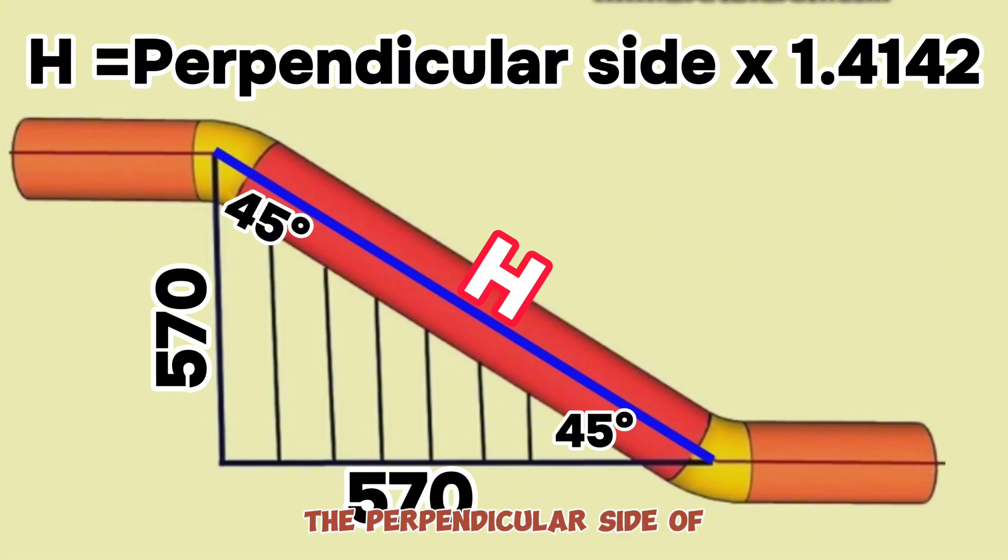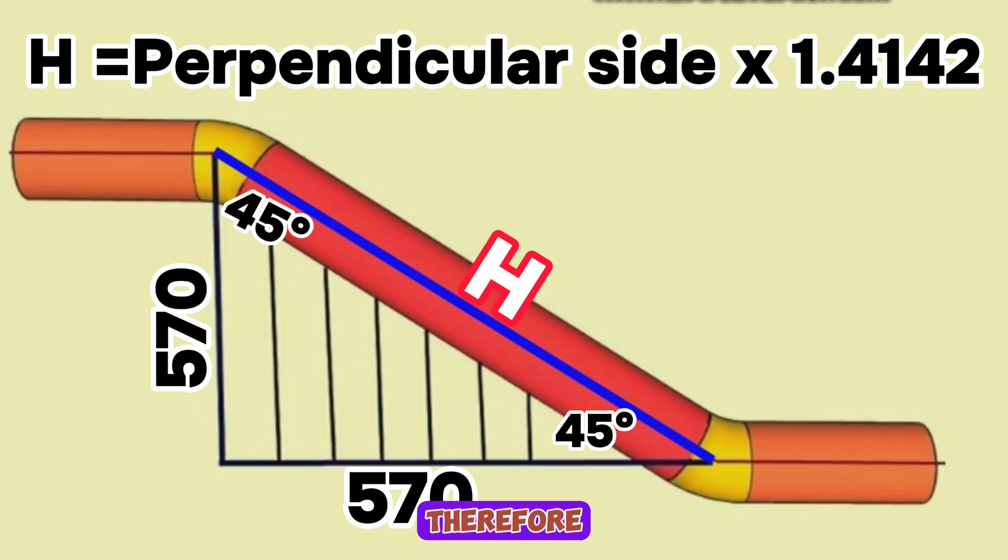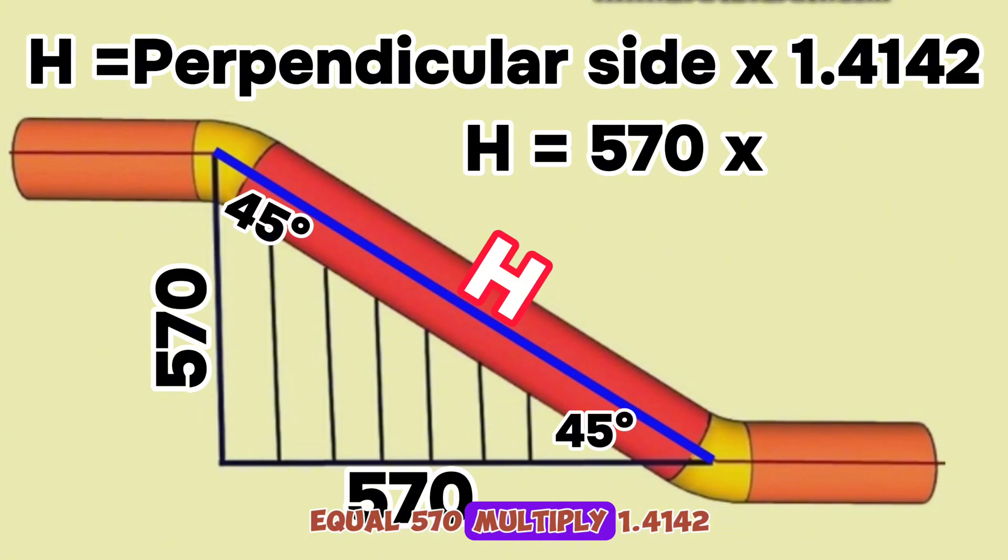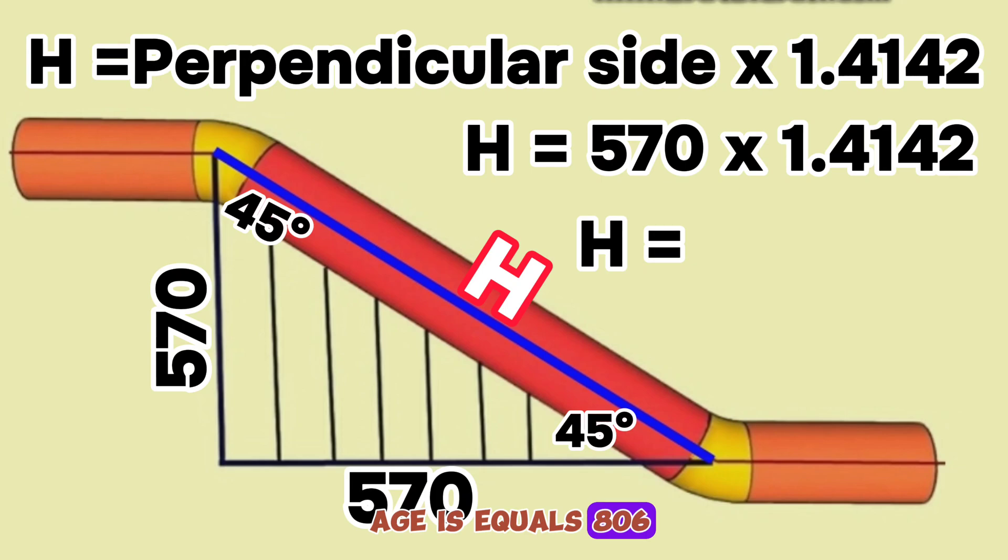In our example, the perpendicular side of the right triangle is 570 mm. Therefore, the hypotenuse H equals 570 multiplied by 1.4142. Calculating this, H equals 806 mm.